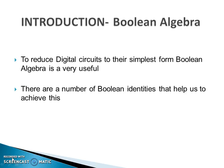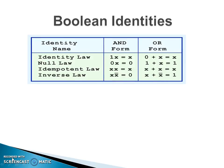Now let's have an overview of various Boolean identities which we can use for reduction. The first identity is the Identity Law, which can be in AND form or OR form: if I AND 1 with a variable I get the original variable; if I OR 0 with a variable I get the original variable. The Null Law states: ANDing a variable with 0 gives logic 0; ORing a variable with 1 gives 1. The Idempotent Law states that ANDing a variable with itself gives x, and ORing x with x gives x.